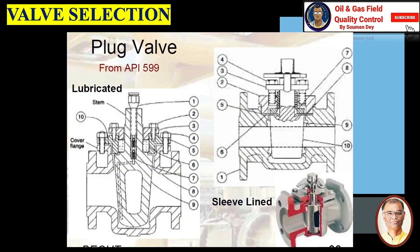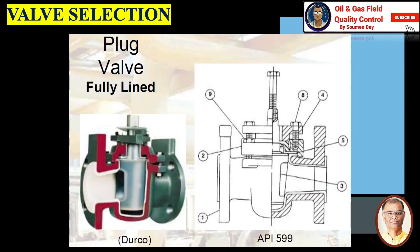Plug valve from API 599: the left one is lubricated type and the right one is sleeve-lined. You can also see a fully-lined plug valve with a sketch as well as a 3D photo.